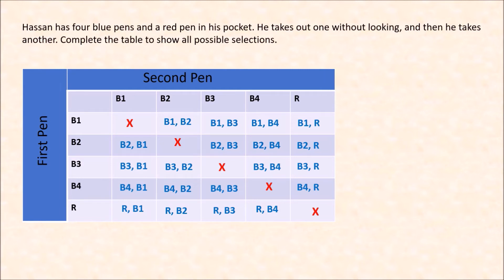So I hope this table is clear. If you count all the possible outcomes, there will be 20. When we use this table to get the probability, the denominator will be 20.